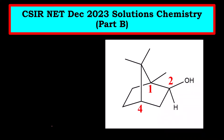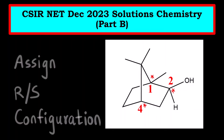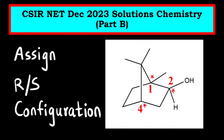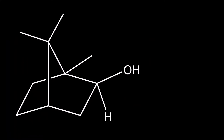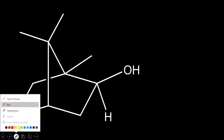Here you can see there are three chiral centers: one, two, and four. What is a chiral center? A carbon attached to four different groups. So you have to assign the R/S configuration — that is, R/S nomenclature is what you have to find out.